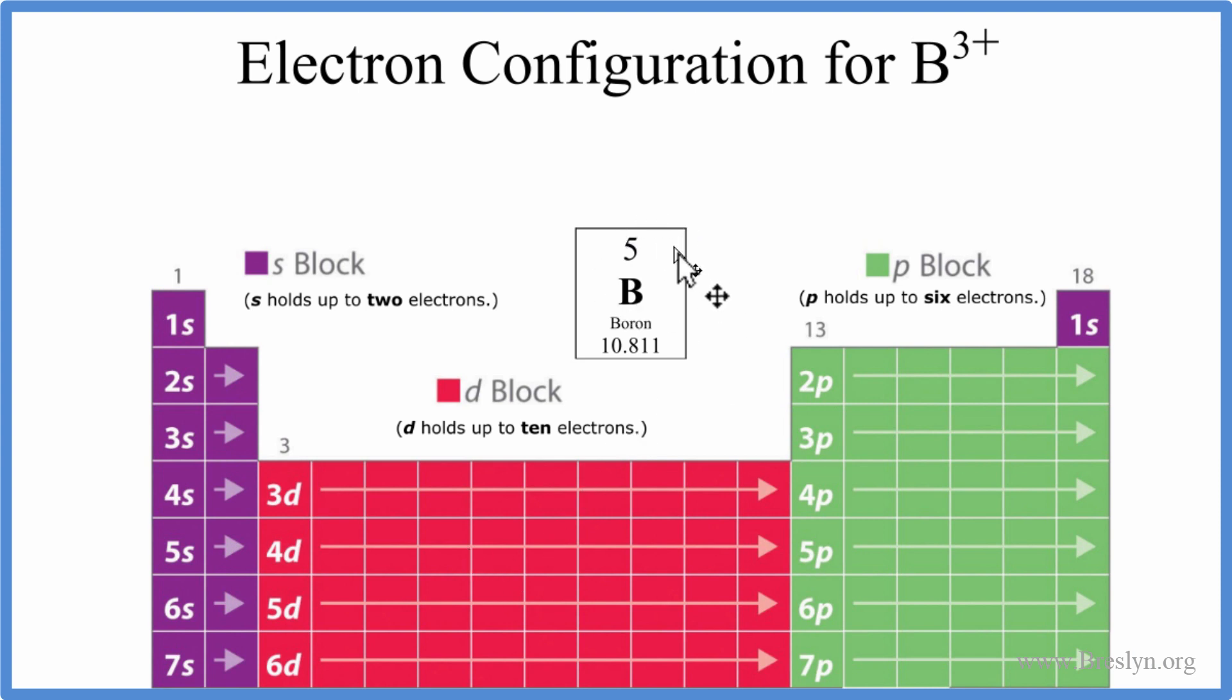So, we have five electrons. We go to the 1s, so that's 1s1, 1s2, and with the s, it can only hold two, it can hold up to two. So, from the 1s2,